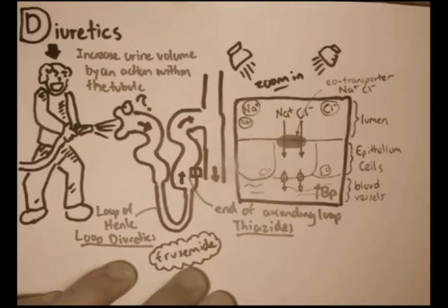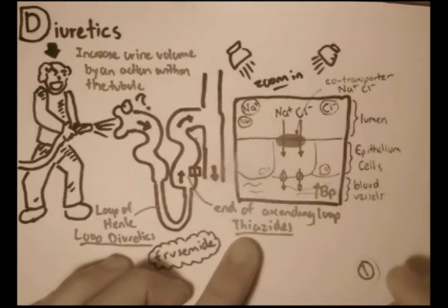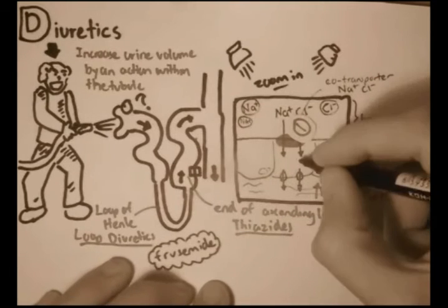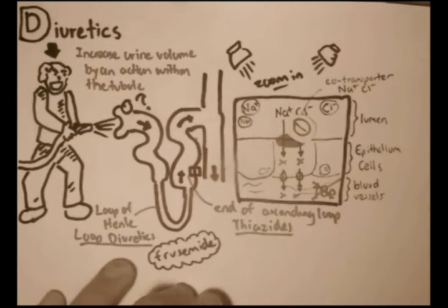So essentially, what the thiazide diuretics do is that they block the co-transporter. It blocks the chlorine molecule. So if the chlorine is blocked, the chlorine doesn't get absorbed. But that means that the sodium doesn't get absorbed. And so none of them get absorbed, and so the blood pressure drops.